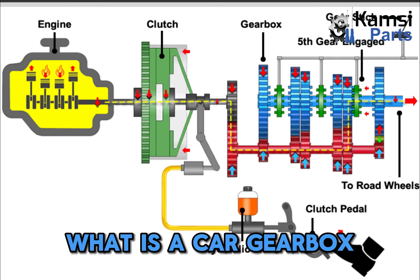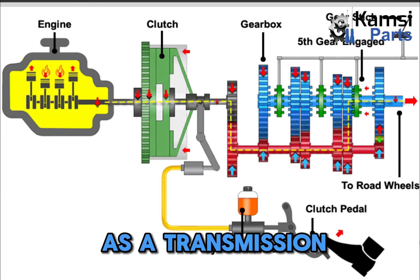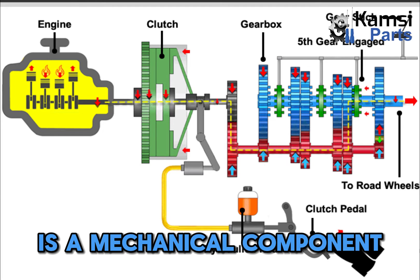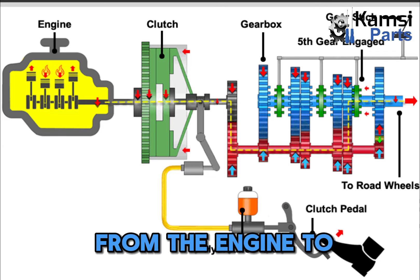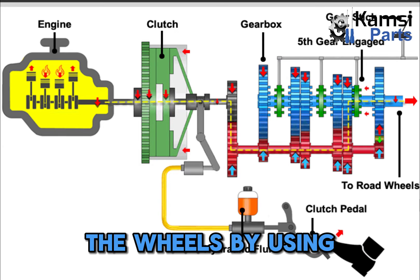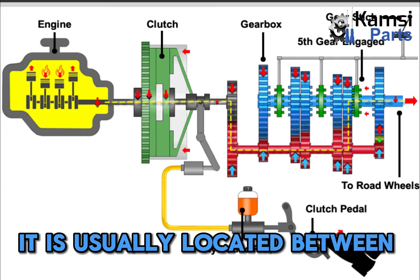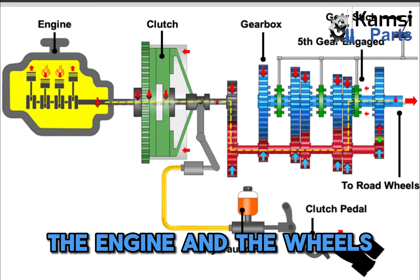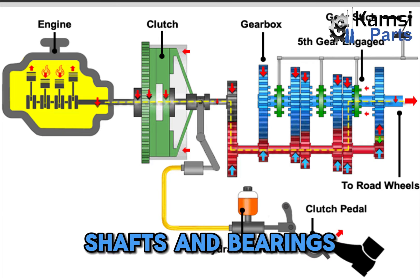What is a car gearbox? A gearbox, also known as a transmission, is a mechanical component that helps to transfer power from the engine to the wheels by using different gear ratios. It is usually located between the engine and the wheels and consists of several gears, shafts, and bearings.